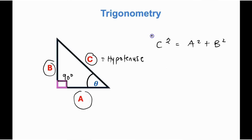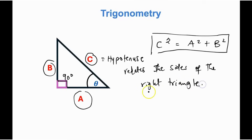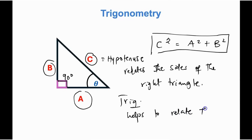This powerful Pythagorean theorem allows us to relate the sides of the right triangle. Trigonometry then helps us to relate an angle — for example, theta — to the sides of the triangle.